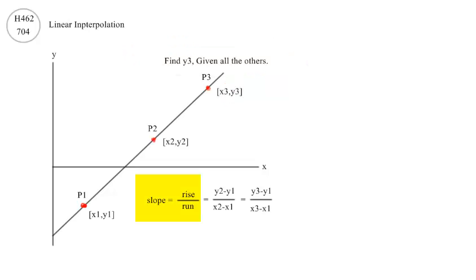Writing the slope relationship between points 2 and 1 and then again between 3 and 1, solve the equation for y3. We know all of the variables on the right, solve for y3.